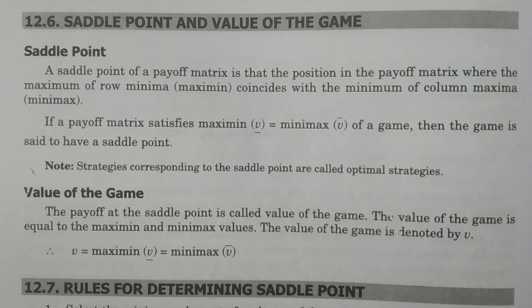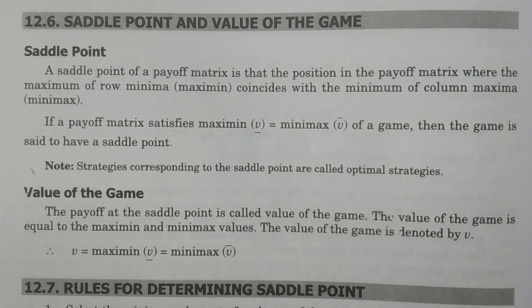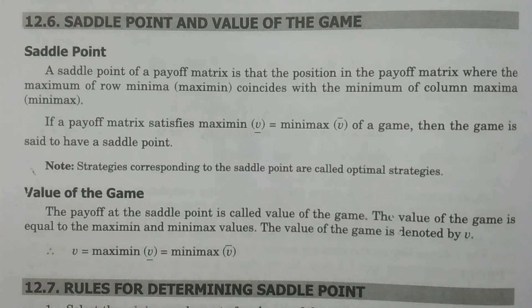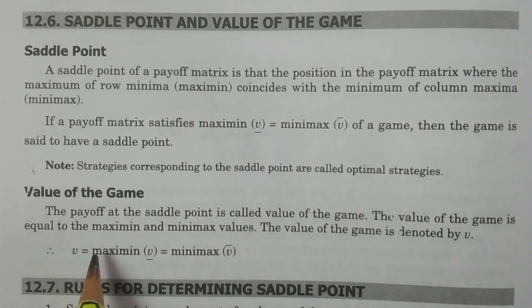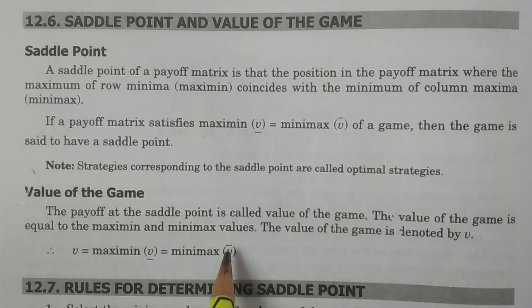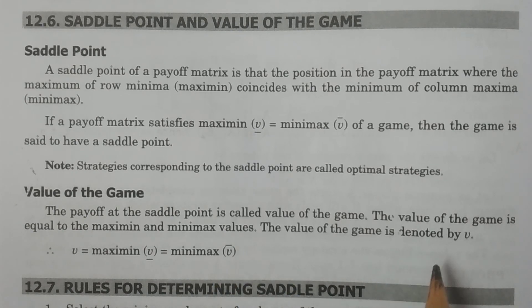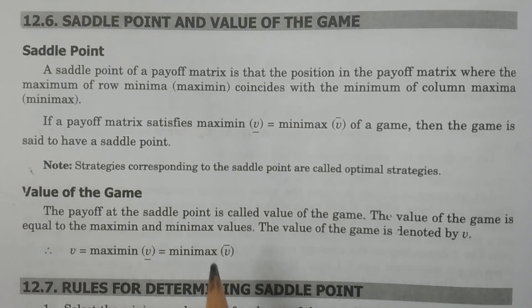For example, if the value is 10 rupees, that means player B pays player A 10 rupees. If it is minus 10, then player A pays player B 10 rupees. The payoff at the saddle point is called the value of the game.